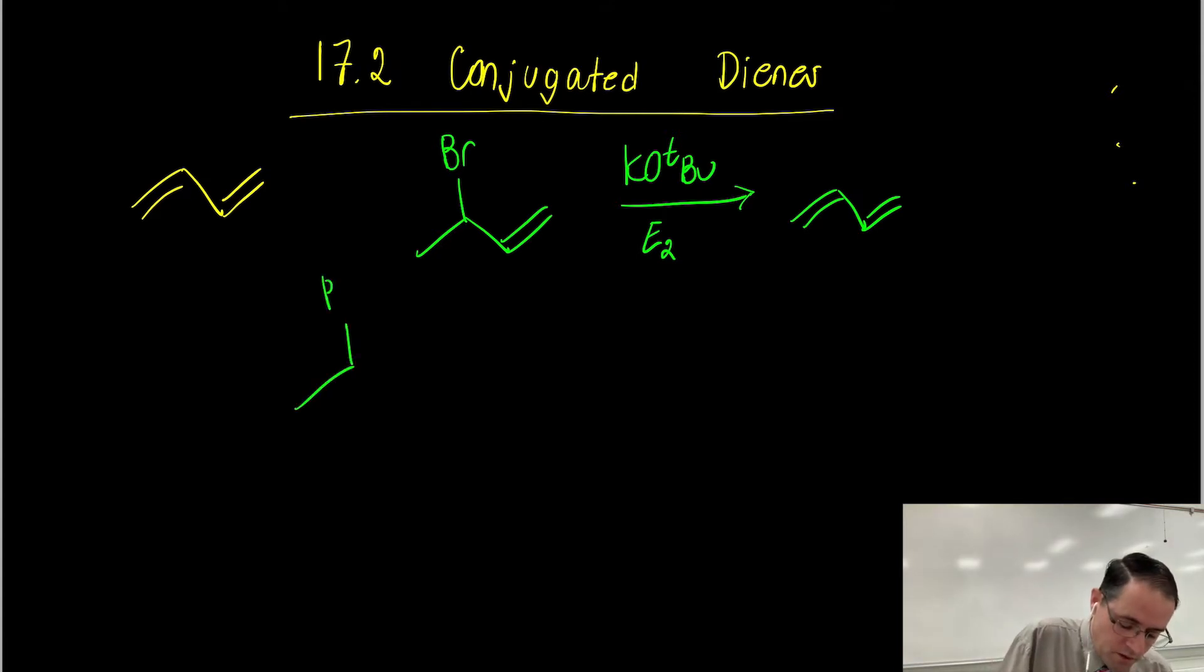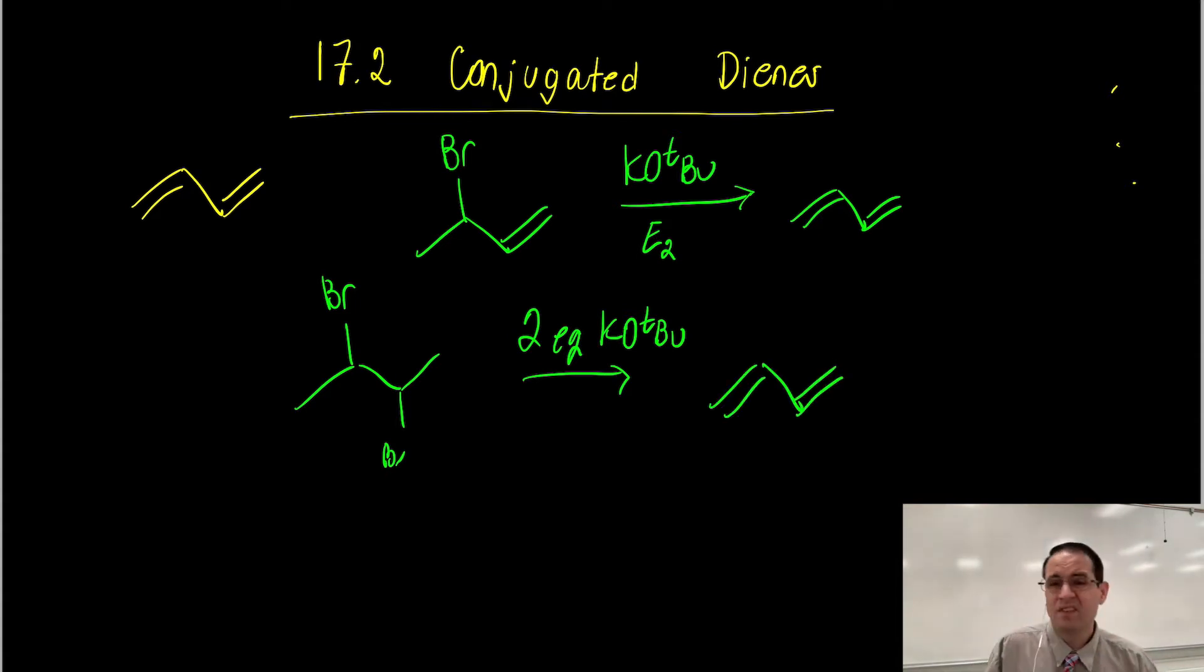If you have a dihalide, so here we have 2,3-dibromobutane, and we want to treat this with two equivalents of potassium tert-butoxide. So we'll get an alkene on the left, and we'll get an alkene on the right as well. So that's how we could synthesize this molecule.